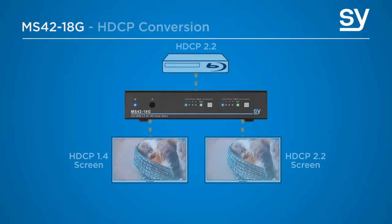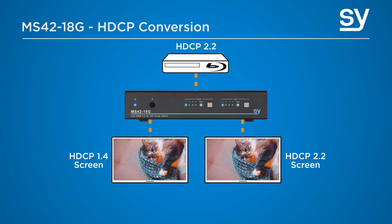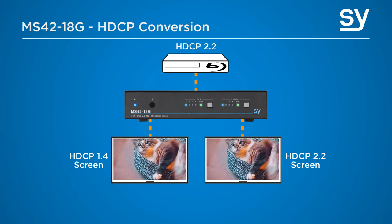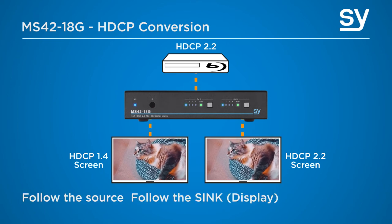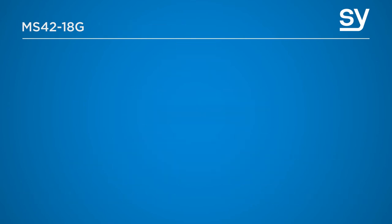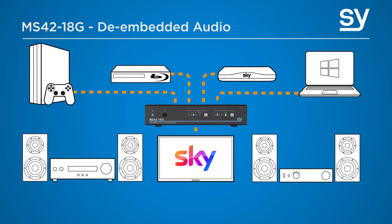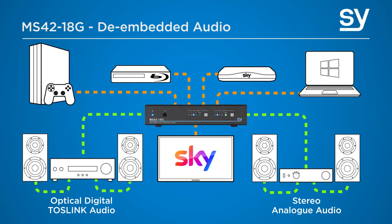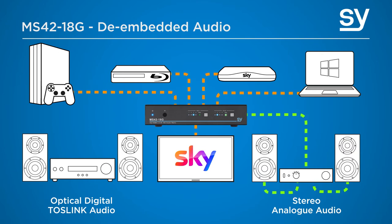Now let's talk about some of the other features this HDMI matrix switch has to offer. The next feature is HDCP conversion — you can convert from HDCP version 2.2 to version 1.4 and there are three HDCP modes to choose from: follow the source, follow the sync display, or cascade mode. The embedded audio is also available on both outputs and can be output as stereo analog audio or optical digital Toslink audio.